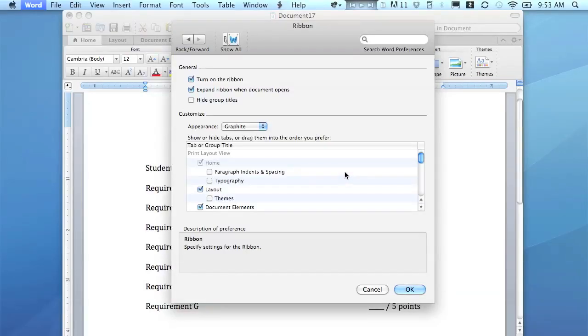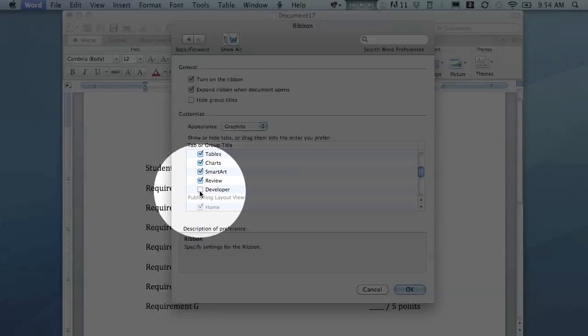Once I'm here, I need to scroll down. What I'm looking for is I want to add a tab to my ribbon, which is the toolbar, and I want to add the Developer tab. So I'm going to click that and click OK.